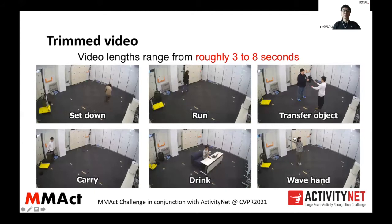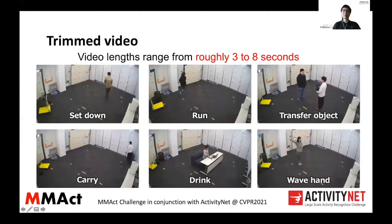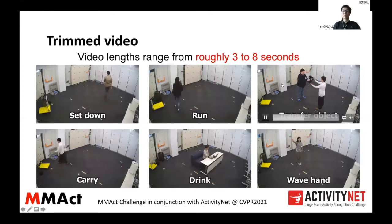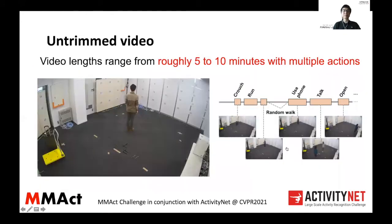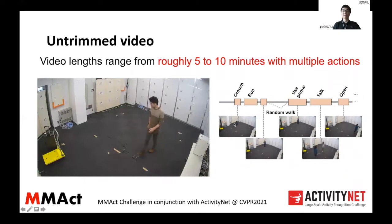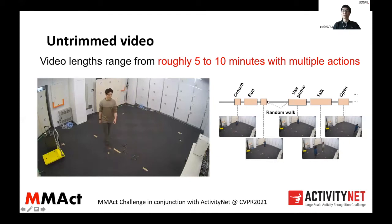We provide 32,000 trimmed videos as clips in our dataset, with lengths ranging from roughly three to eight seconds. Example classes include sit down, run, transfer object, carry, drink, and wave hand. We also provide untrimmed videos with lengths ranging from roughly five to ten minutes with notable actions. In these untrimmed videos, a person performs each action one by one, with random walking in between, and the interval between each two actions ranges from roughly five to 30 seconds.